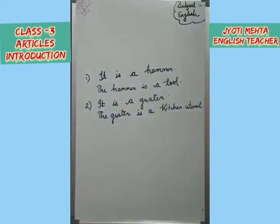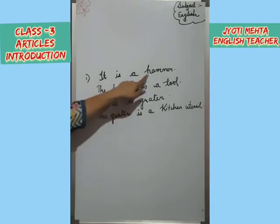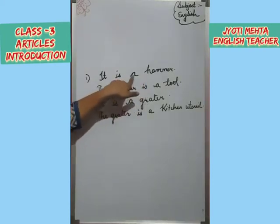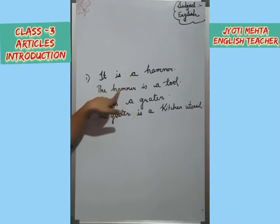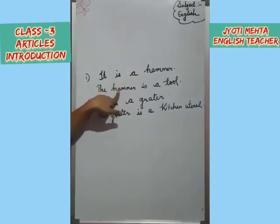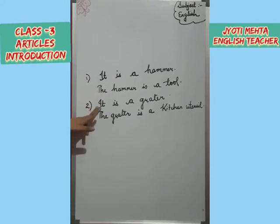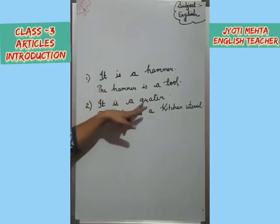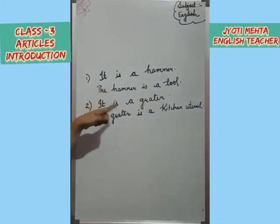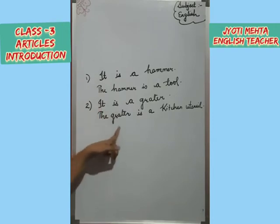So what have we learned from here? When we are talking about something in general, what are we writing before the noun? A. And when we are talking about that same thing particularly, we are putting 'the' before it. In the second sentence also, when we are talking in general, we have written 'it is a grater,' and when we are specifically talking about the grater, we have written 'the' before it.